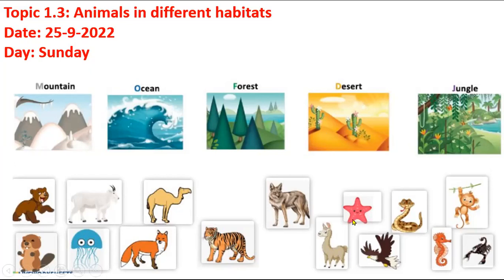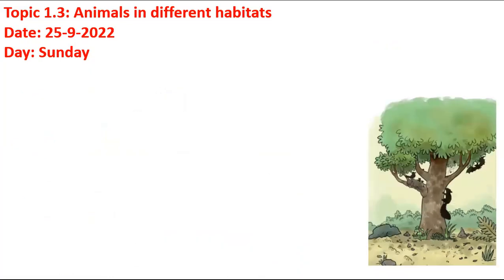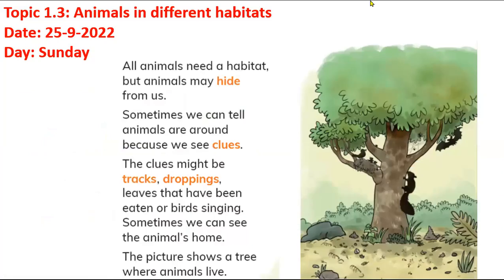I already sent a worksheet — you have to sort out what is a good place for each animal to survive. We also learned that all animals need a habitat, like the squirrel, bat, and bird — they need shelter and a home to survive. Animals may hide from us because they think humans might hurt them.